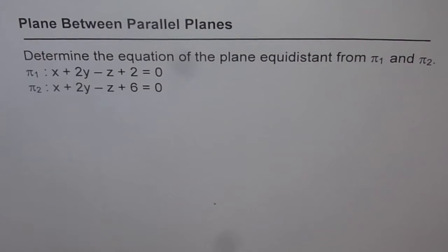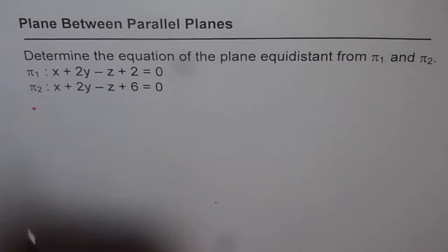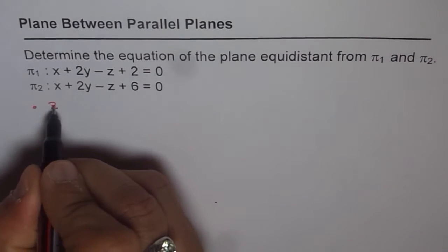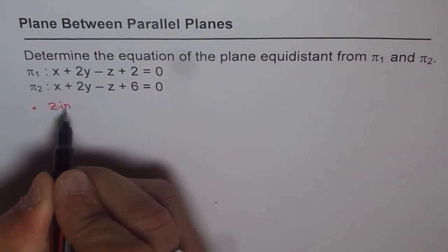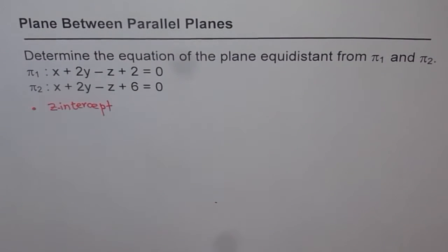I am taking very simple equations and very simple examples. The idea is to understand the concepts. Whenever we are in this kind of situation where we have a choice of finding a point, we are always finding one particular point and that is the z-intercept. The z-intercept is the point which we normally find if we have a choice to find a point.